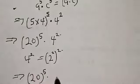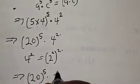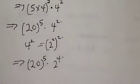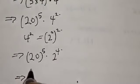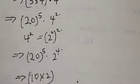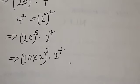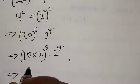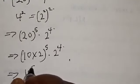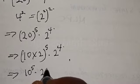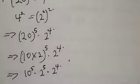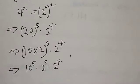Multiplied by 2 raised to power 2 squared, which is 2 raised to power 4. Now 20 can also be expressed as 10 times 2, so we have 10 times 2, raised to power 5, multiplied by 2 raised to power 4. Applying the same rule, this gives us 10 raised to power 5, multiplied by 2 raised to power 5, multiplied by 2 raised to power 4.